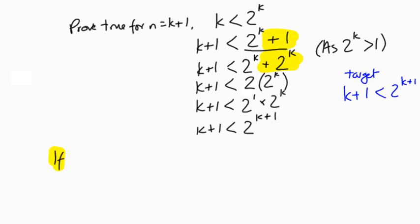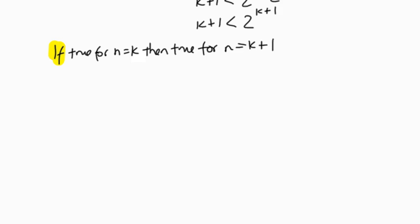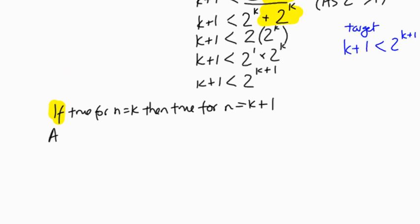...if it's true for n equals k, we've just shown that it's true for n equals k plus 1. And we'd have to leave it there unless we can show that it's true for a specific value. Because it's true for n equals 1, then the conjecture is true by induction.